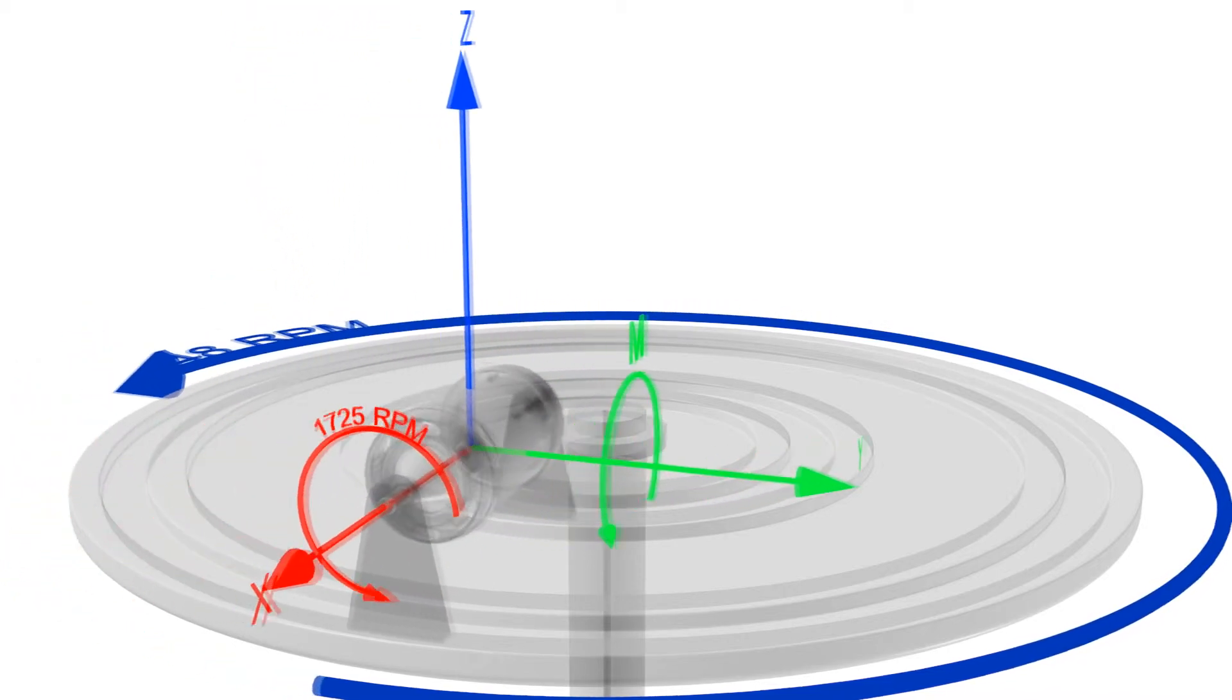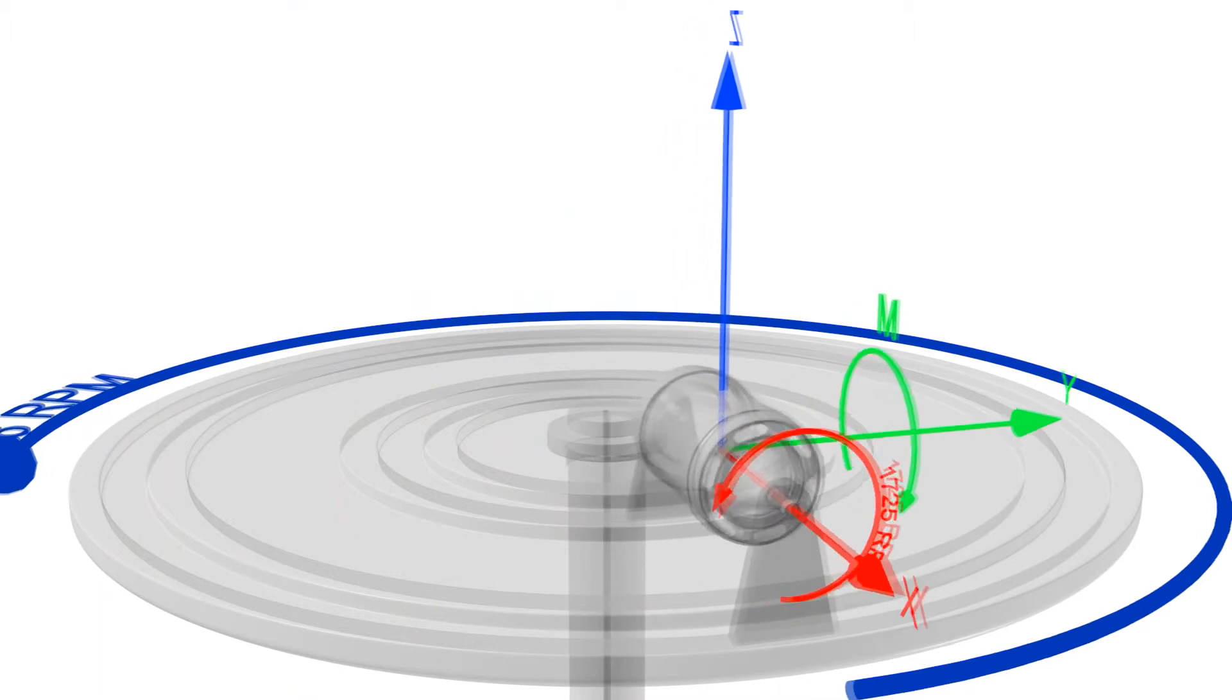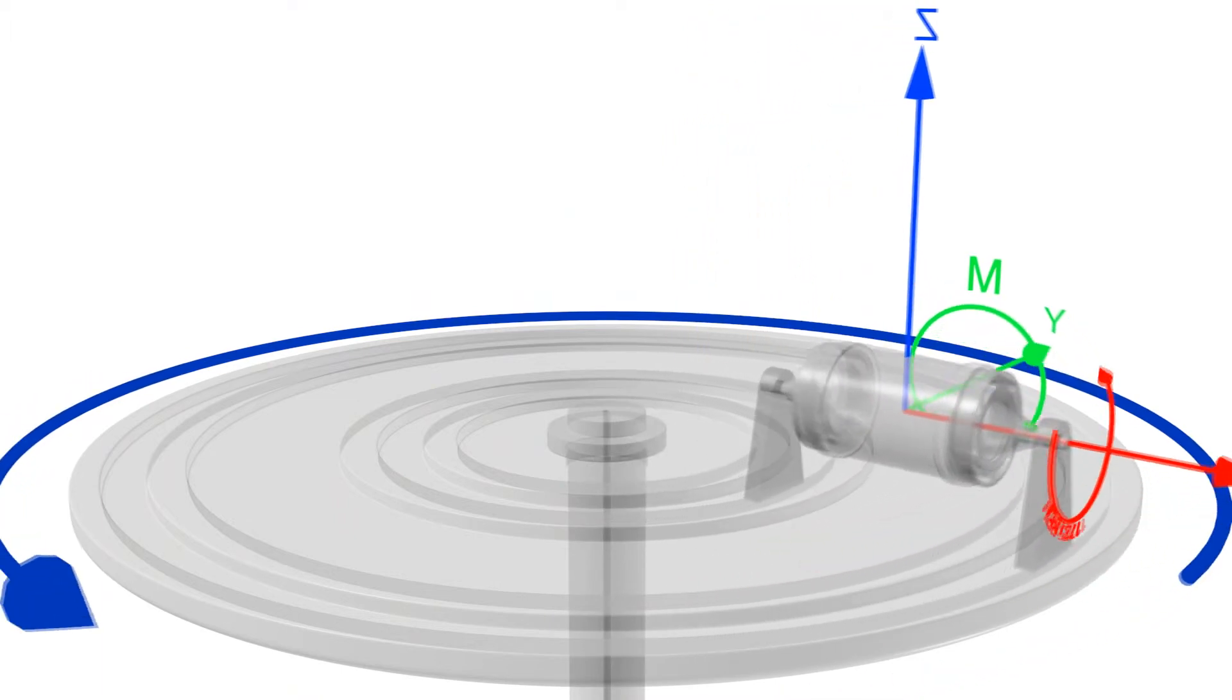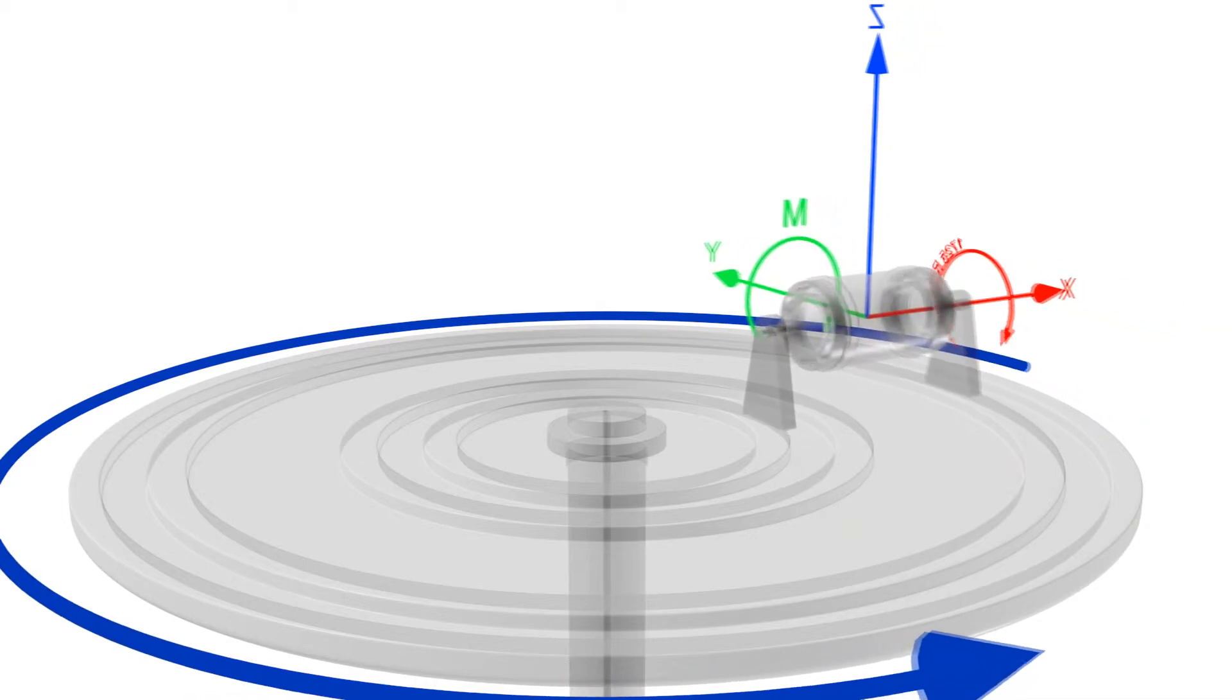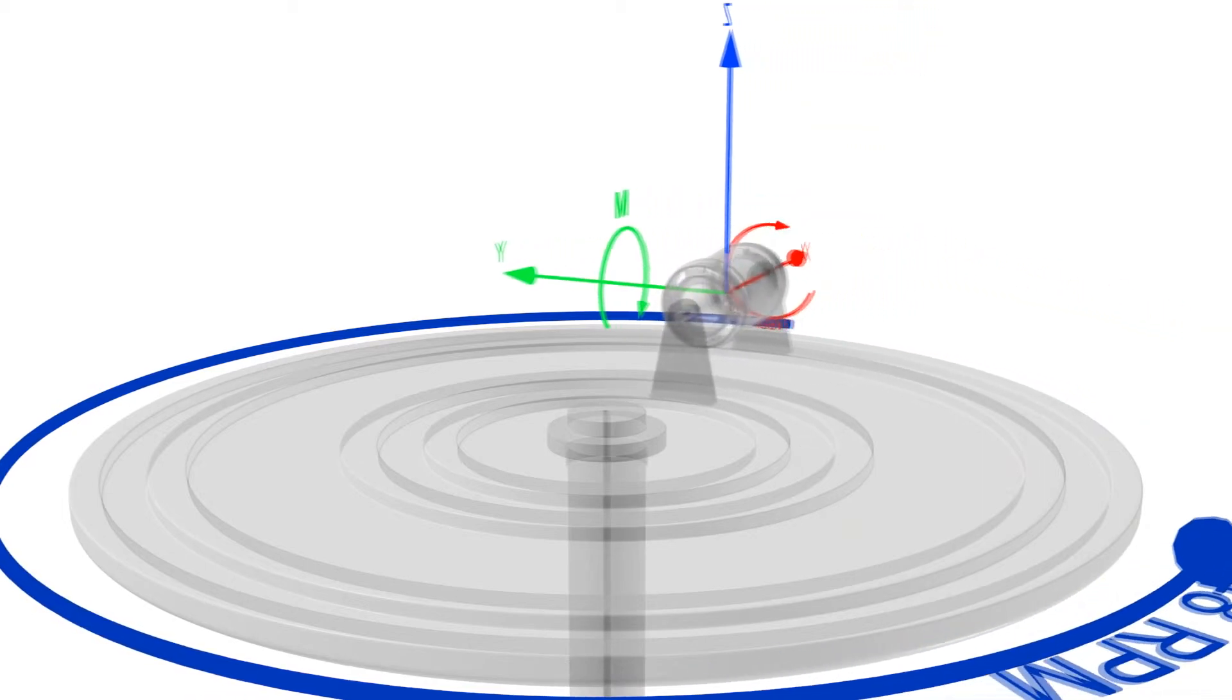In our example, the rotation axis is the blue z-axis and the spin axis is the red x-axis. So the moment component will appear over the green y-axis.